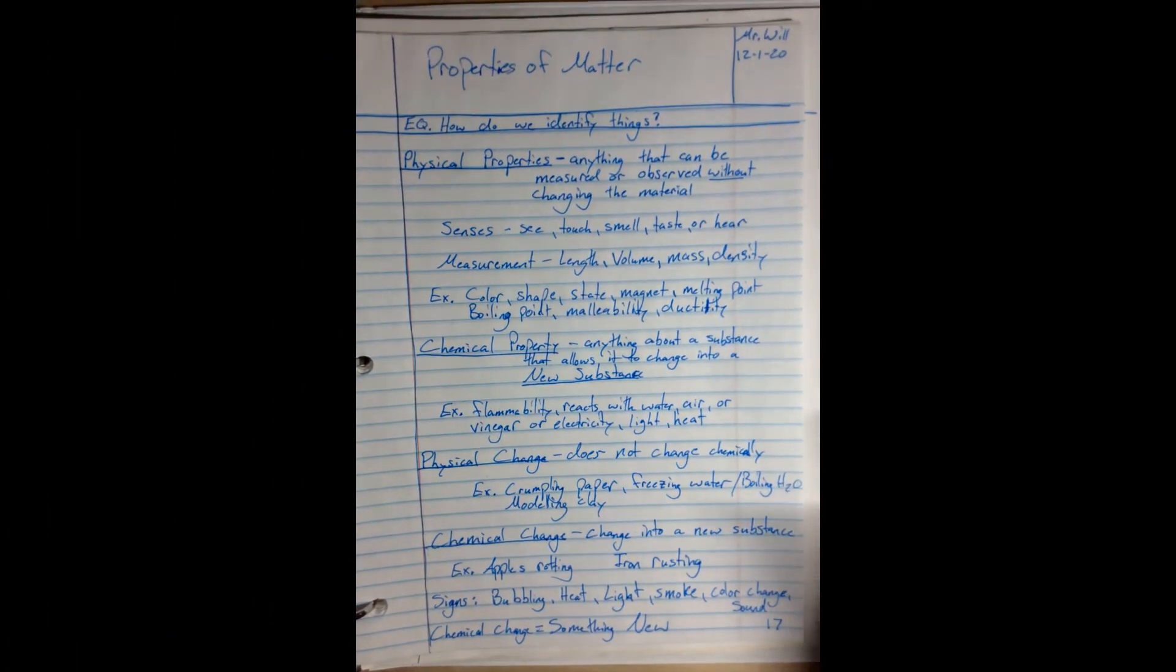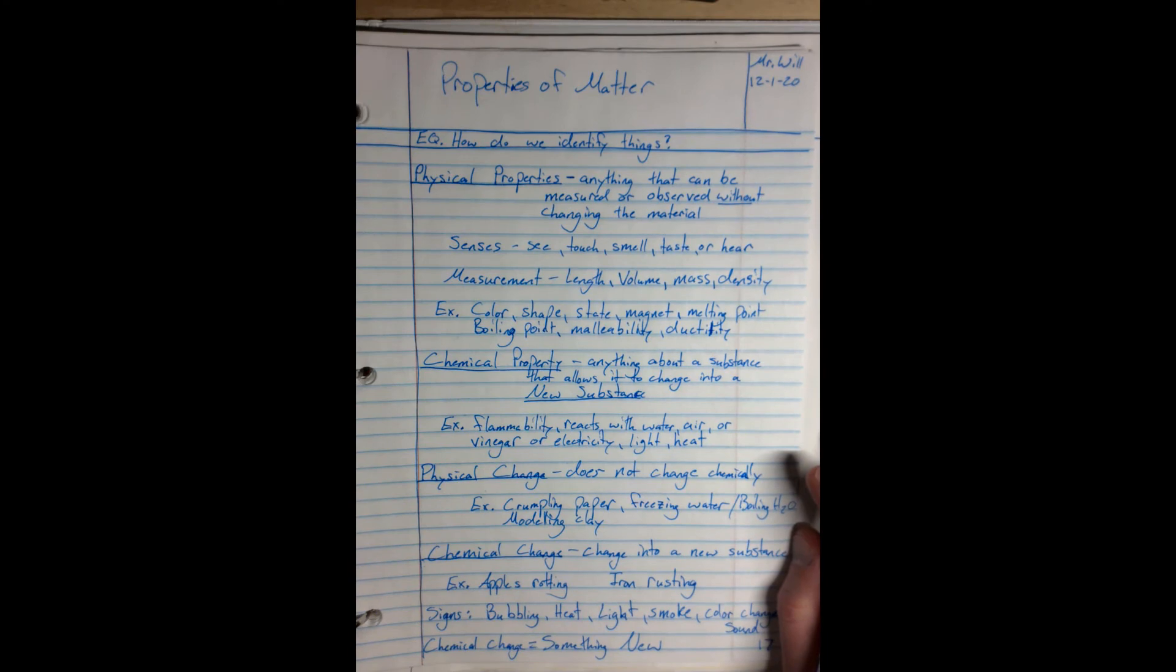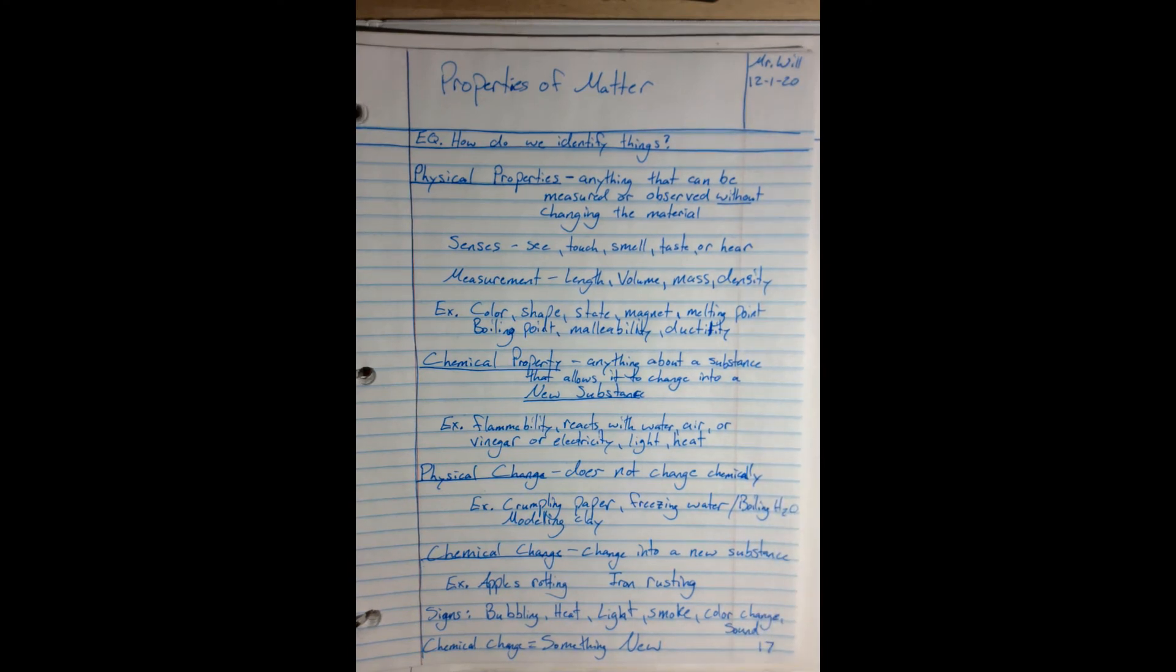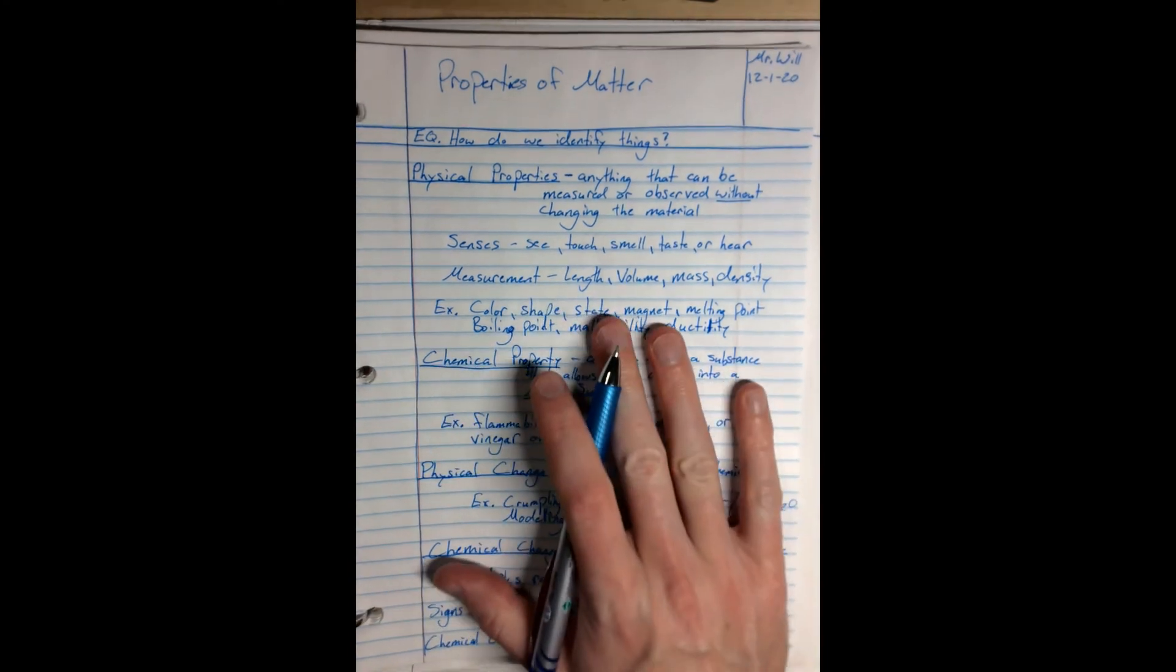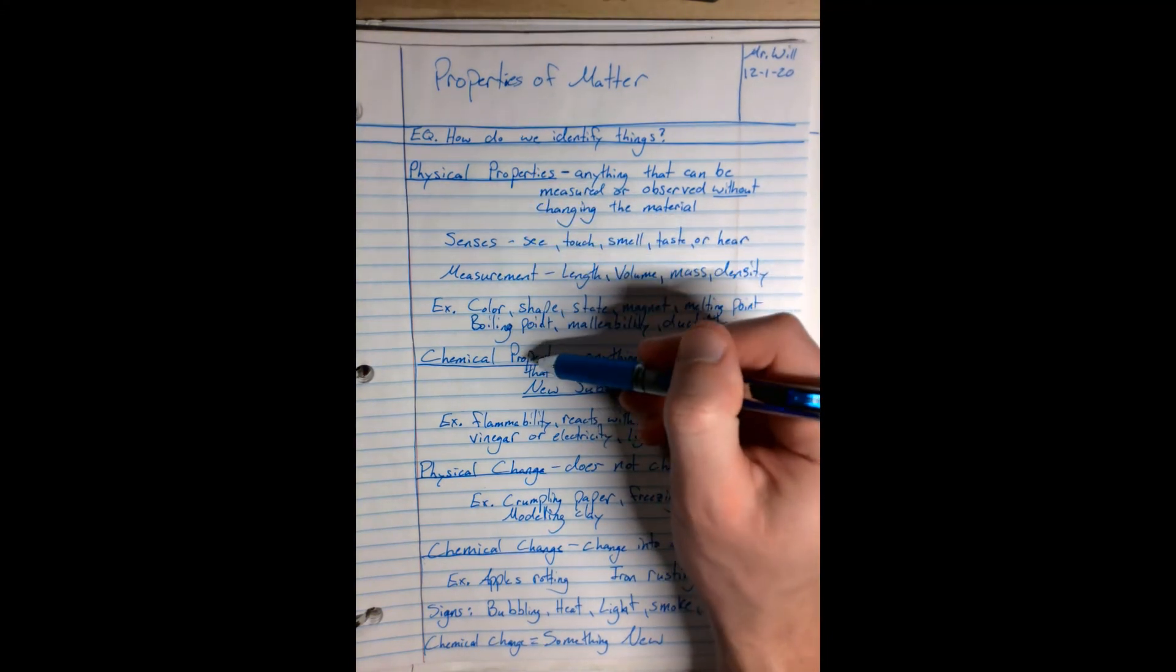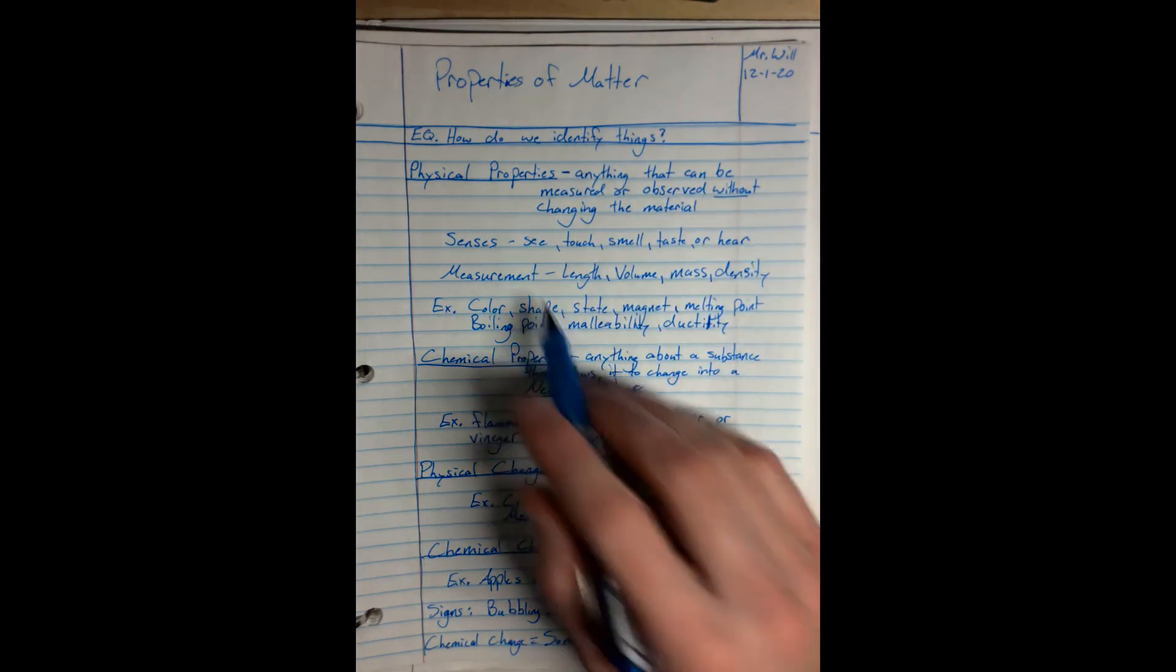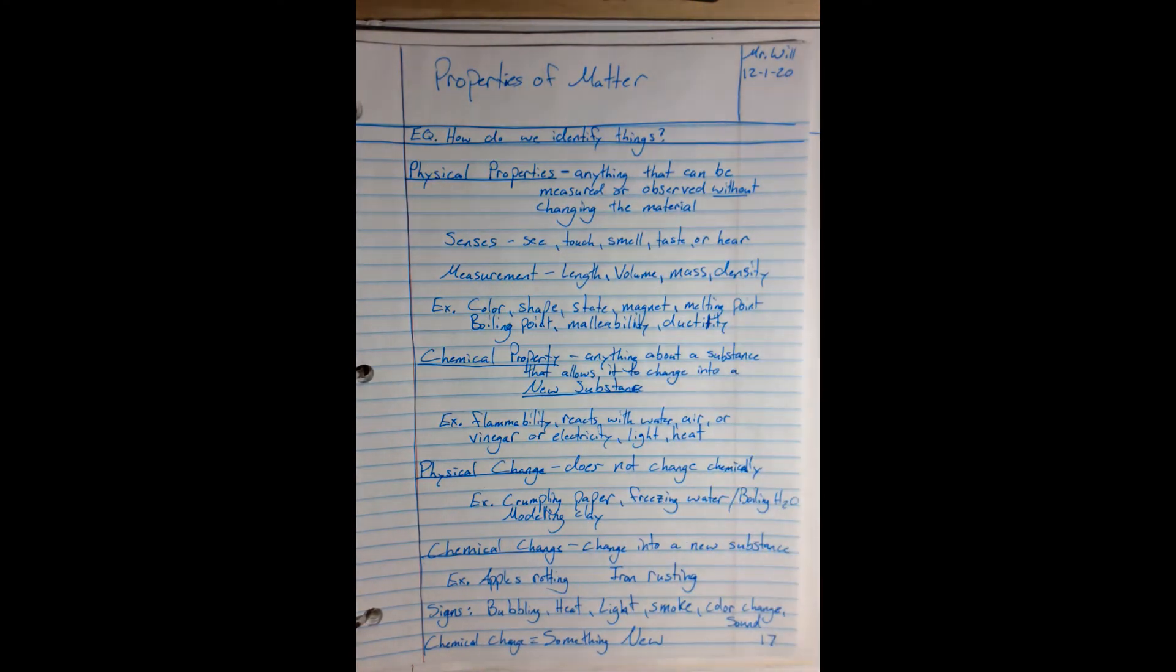All right. So that is a full page. I'm hoping you guys can fit it all on there. Squish it together if you have to. Yeah, so this is page seventeen, Properties of Matter. Talking about physical and chemical properties and physical and chemical changes. And then we'll get into some other examples of all of these things and how we identify different parts of matter.